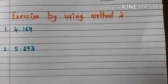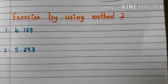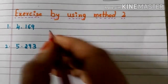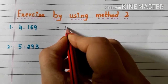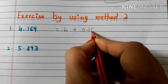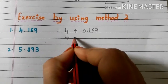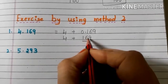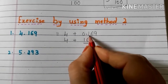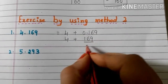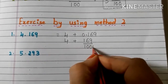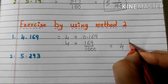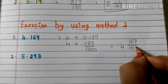Now let us do the exercise using Method 2. Here we have the first decimal number 4.169. How can we write 4.169? As 4 plus 0.169. Write 4 as it is, and write the number without decimals: 169 — note we do not need to write the leading zero. Count how many digits are there after the decimal point: 1, 2, 3. So in the denominator we have to write 1000. Now we have 4 plus 169 by 1000, so the mixed fraction is 4 and 169 by 1000.